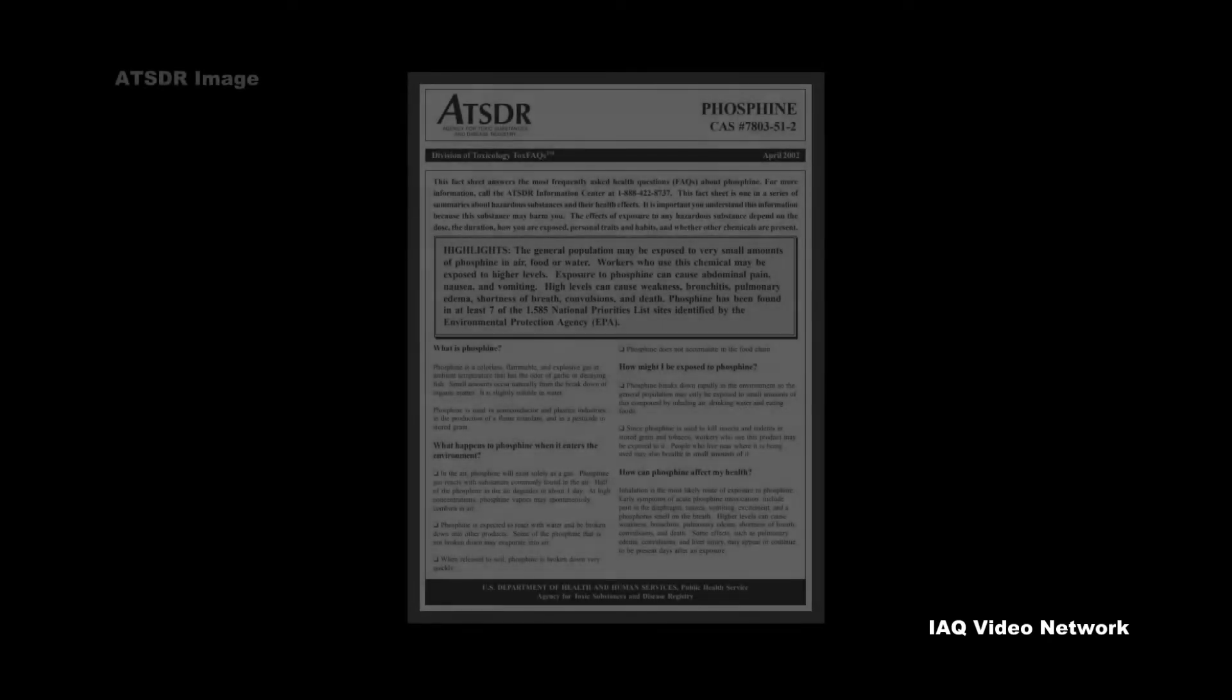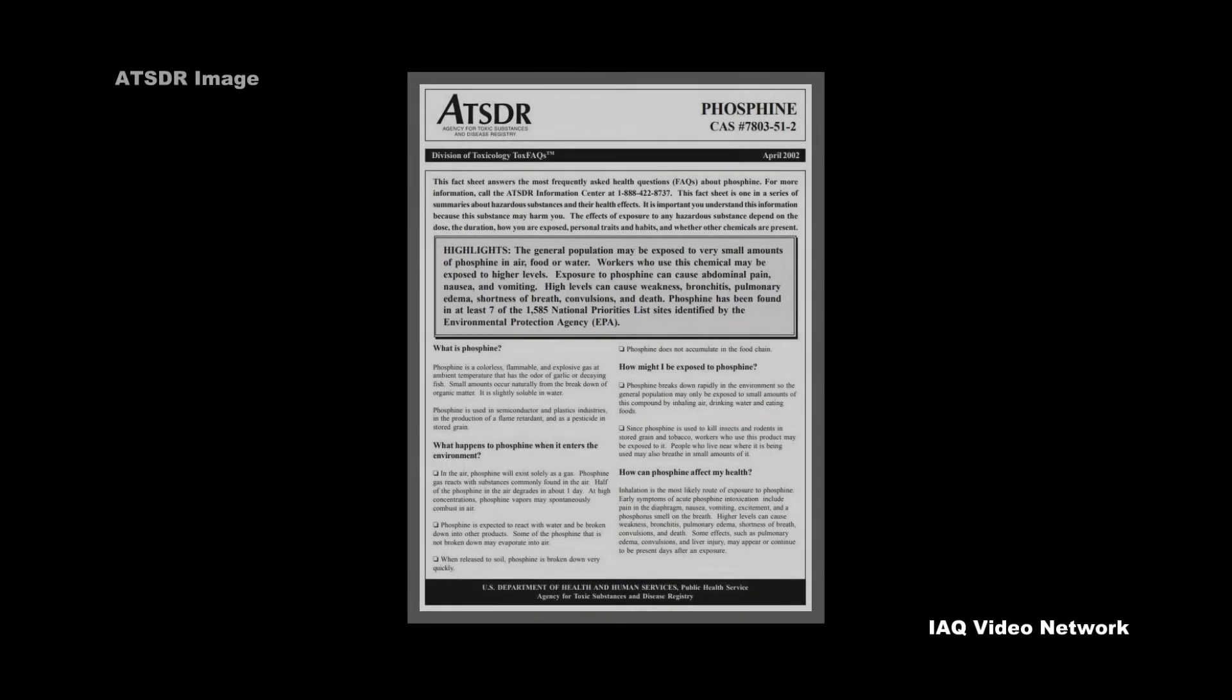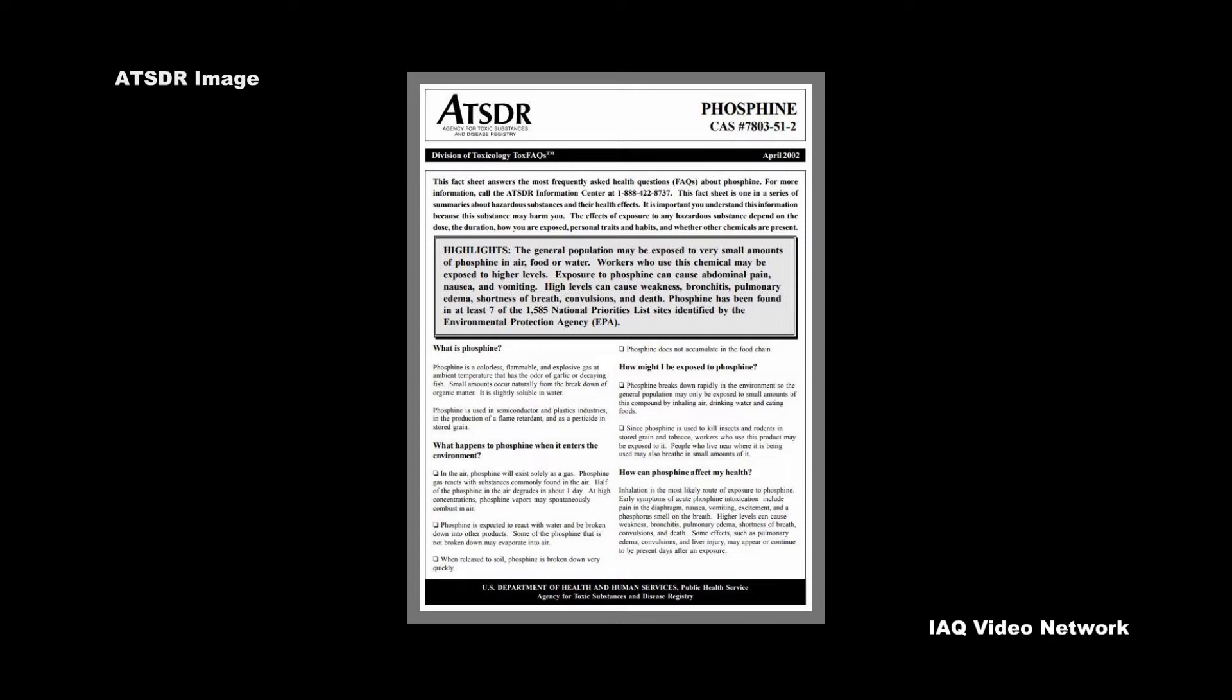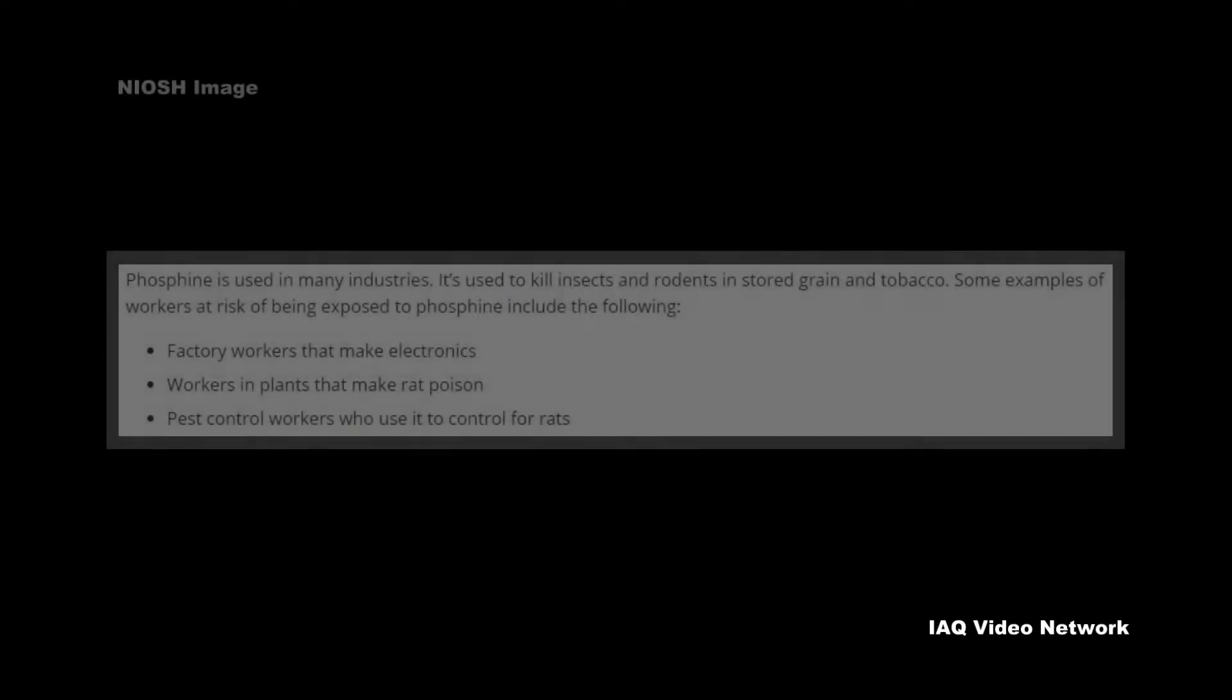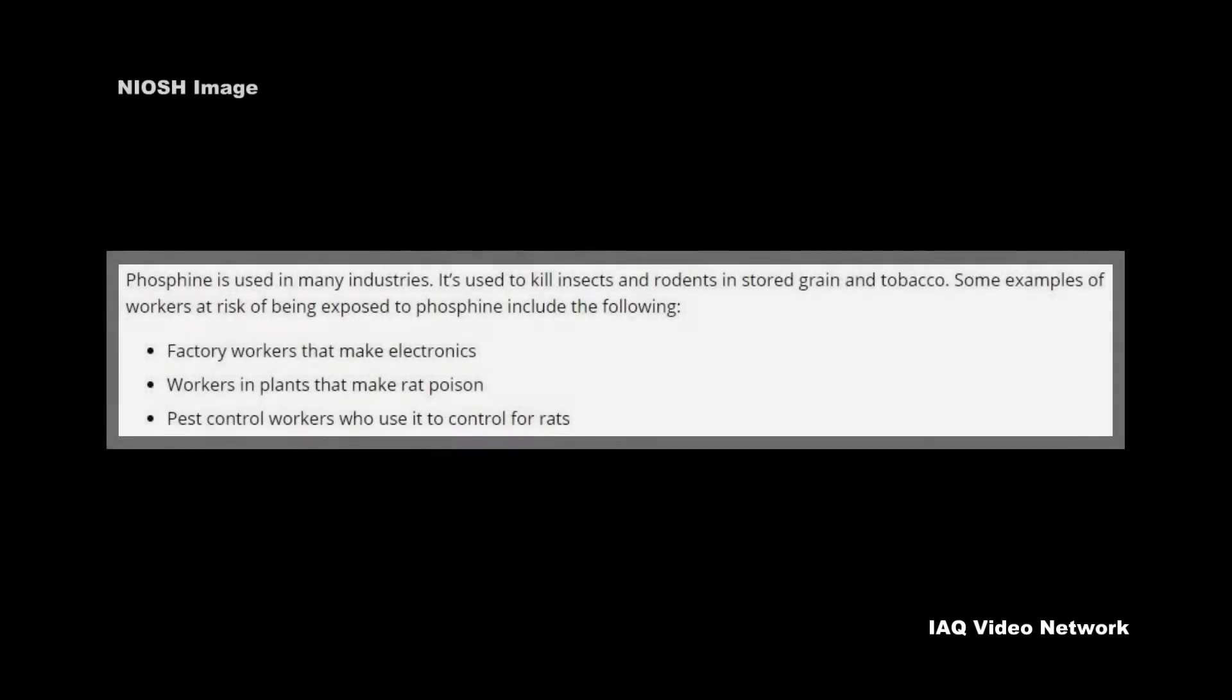The Agency for Toxic Substances and Disease Registry reports that phosphine is used in the semiconductor and plastics industries, in the production of a flame retardant, and as a pesticide in stored grain. NIOSH also states it is used as a pesticide in stored tobacco.